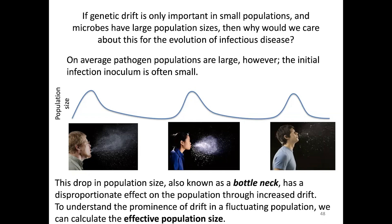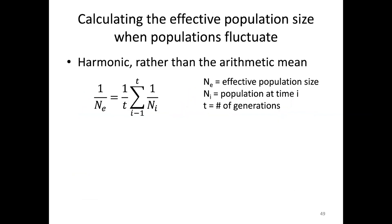Now the math: if we have a fluctuating population size, how do we calculate the effective population size? I'm going to teach you a new way of averaging numbers — the harmonic mean rather than the arithmetic mean. The harmonic mean accounts for the disproportionate effect of a bottleneck compared to the really large population size, because drift happens more in small populations than large populations. So it accounts for that disproportionate effect.